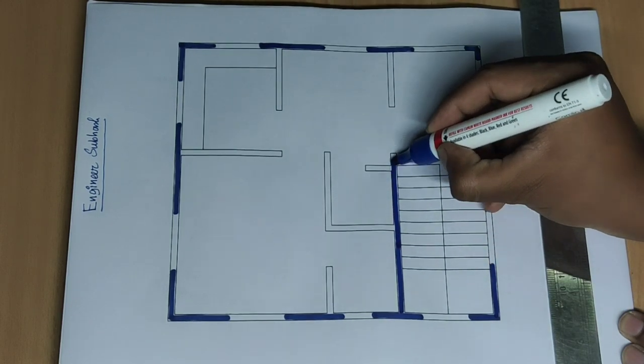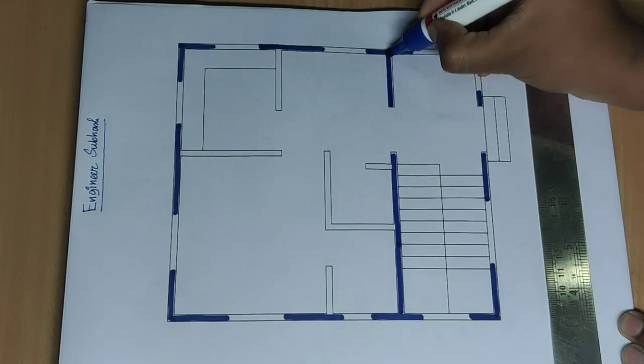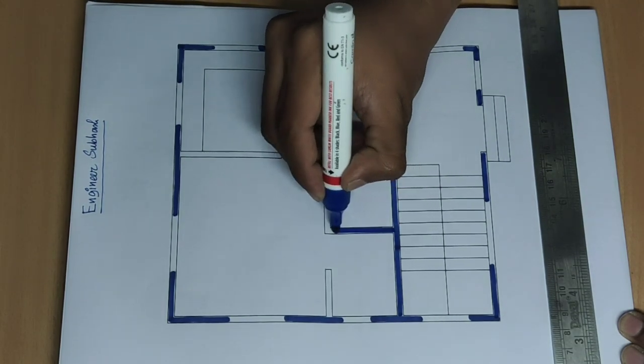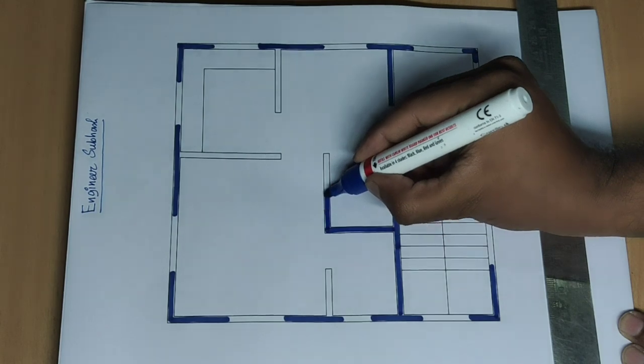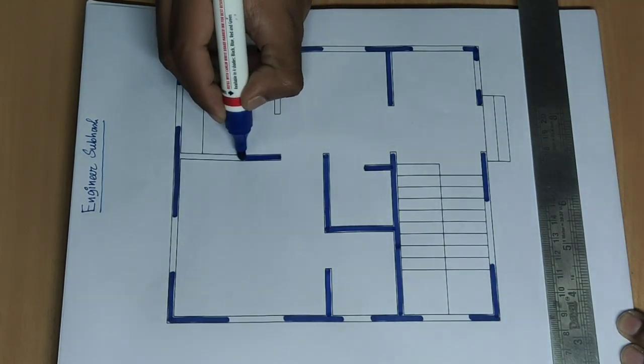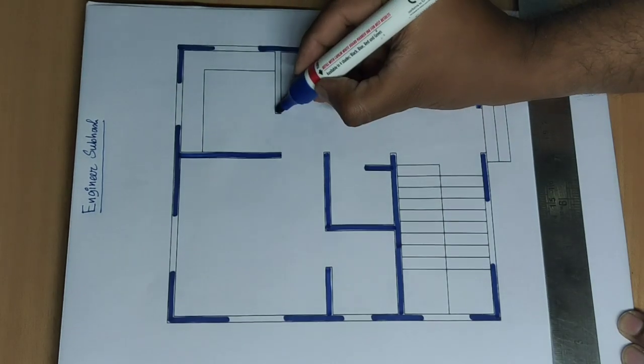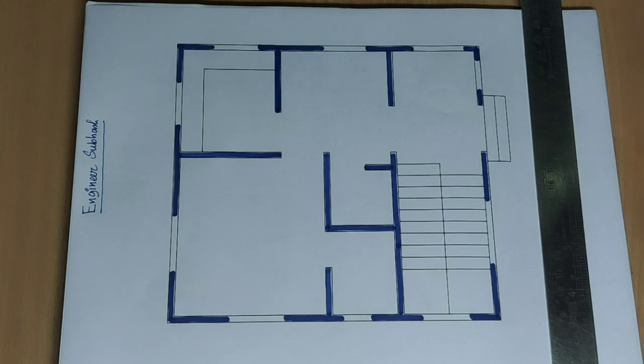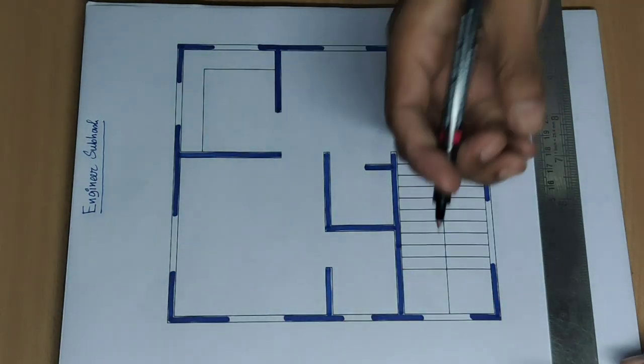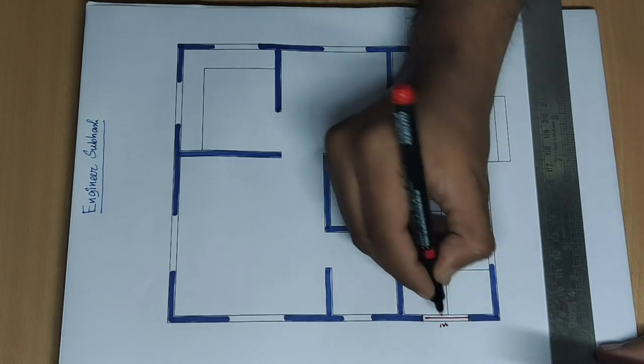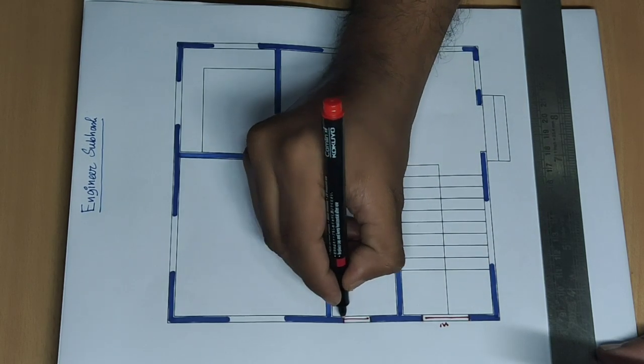This is wall, 5 inch wall. Wait, marking is complete. Next, window marking, window and ventilation.